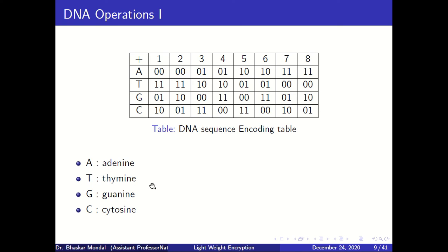Someone might argue for a different assignment — for example, C as 00 or A as 10. You can't deny that choice either. In this way there are eight ways to assign the four combinations of two bits to the four DNA bases, as tabulated here. When using this for cryptography, the sender and receiver must agree on one scheme out of these eight.